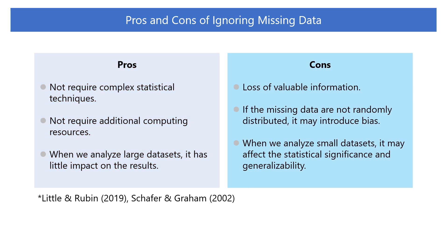However, the biggest concern is the loss of variable information. If the missing data are not randomly distributed, deleting the incomplete records may introduce bias into the dataset. For example, if there are many missing values in a particular demographic group, deleting the data may make the sample unrepresentative and skew the results.